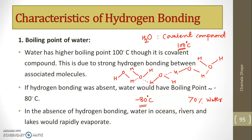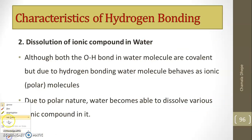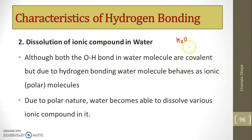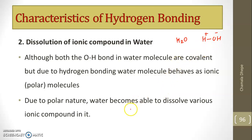The second characteristic is the dissolution of ionic compounds in water. Though both O–H bonds in the water molecule are covalent, due to hydrogen bonding, the water molecule behaves as a polar molecule. In H₂O, the highly electronegative oxygen pulls the electron pair towards itself, so hydrogen acquires a partial positive charge and oxygen acquires a partial negative charge. This polar nature gives water a very high dielectric constant, allowing it to break electrostatic forces of attraction and dissolve ionic compounds.